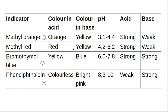Methyl red goes from red to yellow, with a pH range of 4.2 to 6.2 — slightly less acidic than methyl orange, and also used for a strong acid and a weak base. If you're titrating a strong acid and a strong base — like hydrochloric acid and sodium hydroxide — the salt, sodium chloride, has a pH of about 7. Bromothymol blue is used here; it changes color between pH 6 and 7.8, going from yellow to blue.